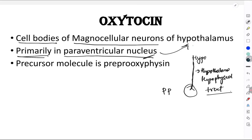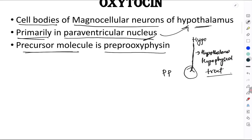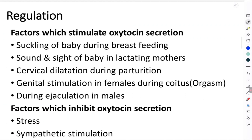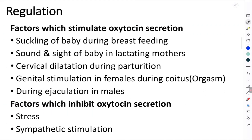Remember, oxytocin is primarily synthesized in the paraventricular nucleus of the hypothalamus, specifically in the cell bodies of the magnocellular neurons. Similar to ADH, it is also secreted in the form of a precursor molecule called pre-pro-oxyphysin. This is a brief introduction regarding oxytocin.